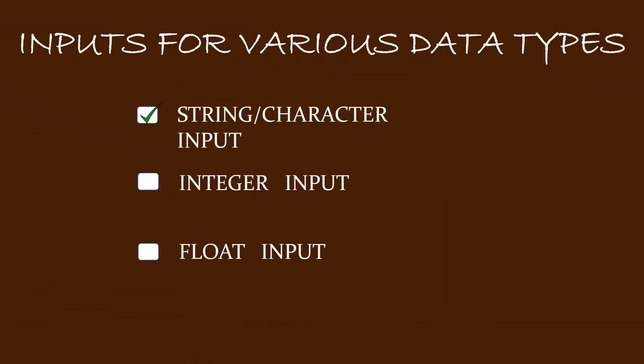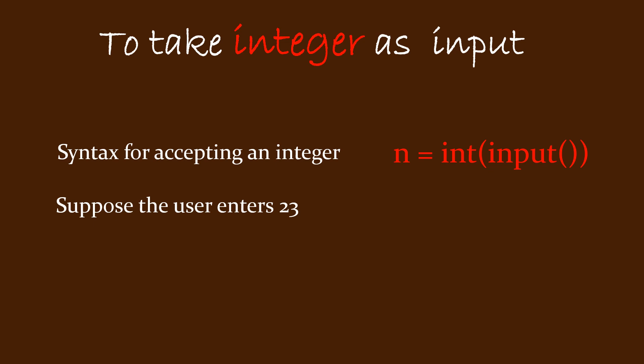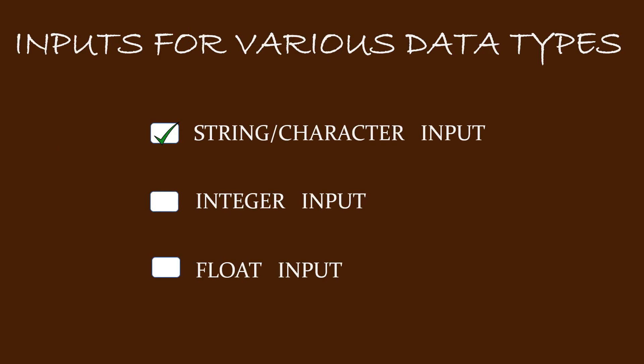Now we will discuss how to take an integer as input. The syntax for accepting an integer input is: n equal to int open bracket input open close bracket and then a closing bracket. If the user enters 23, the variable n will store the number 23 and you can perform mathematical operations on it. Till here we are done with taking an integer input.